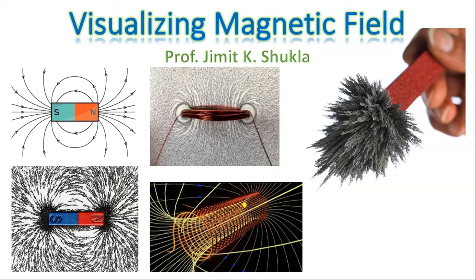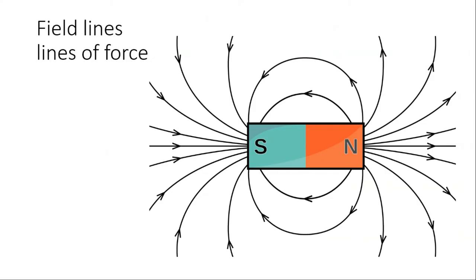Magnetic field is something which is not visualized by our naked eye. We cannot see magnetic flux or magnetic field. So how can we visualize or imagine how magnetic field works and what is its direction? We represent magnetic field through field lines or lines of force. We assume that the magnetic field direction is indicated by these lines of force.